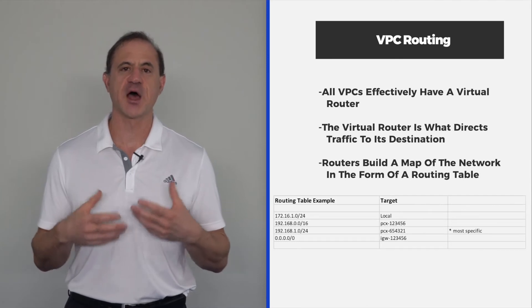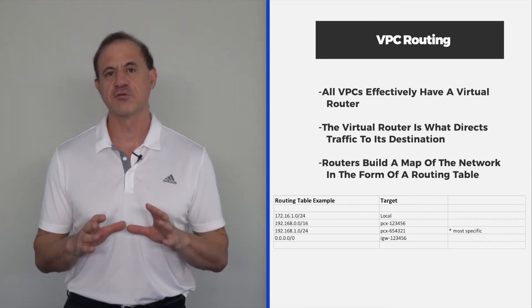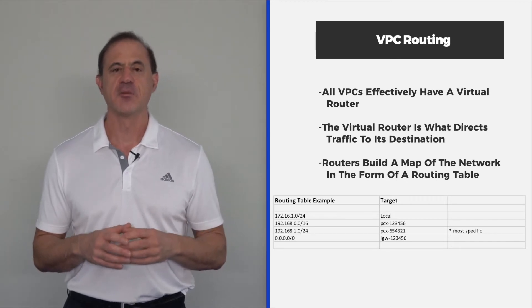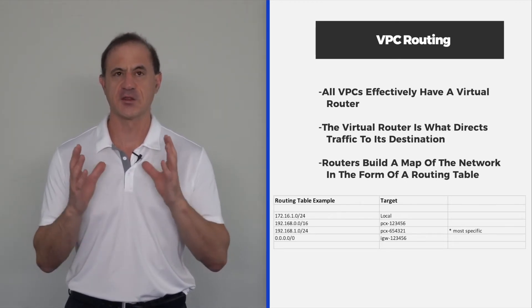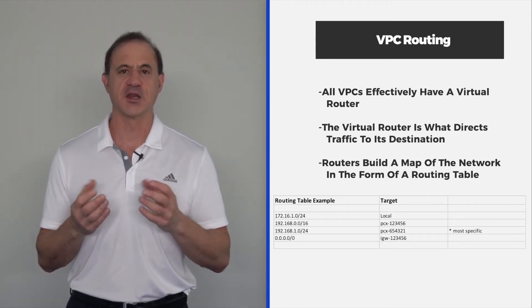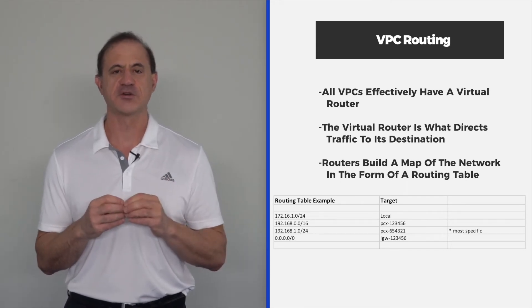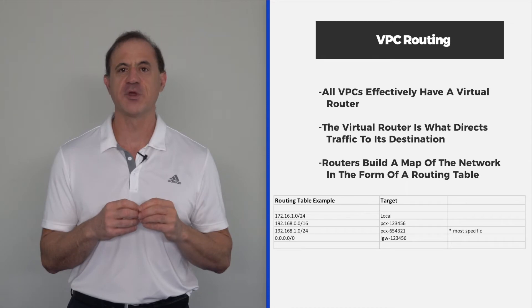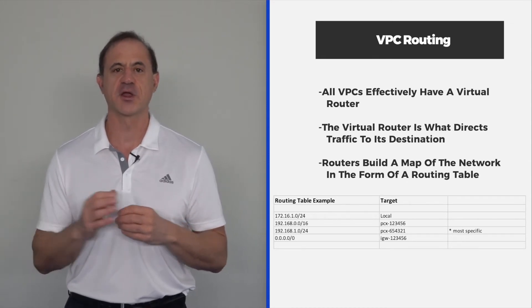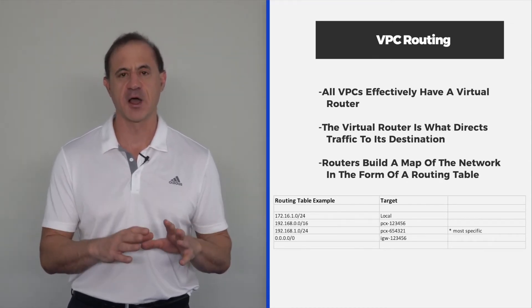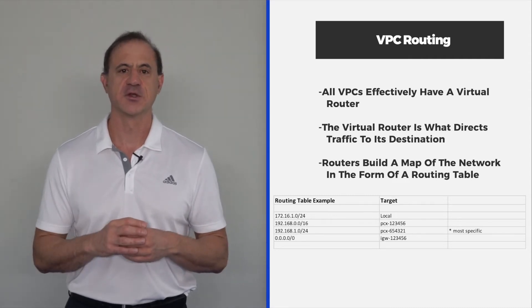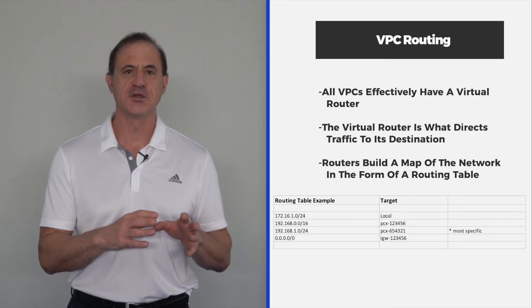The first component we'll talk about is routing and routing tables. The VPC comes with its own high-availability virtual router. A virtual router is essentially a computer with multiple interfaces that has logic to determine how to get traffic from point A to point B — whether that traffic is on the internet, in your data center, or in another part of the AWS network. Anytime you get off a local LAN, you need a router to make those forwarding decisions. Each VPC comes with a virtual router.